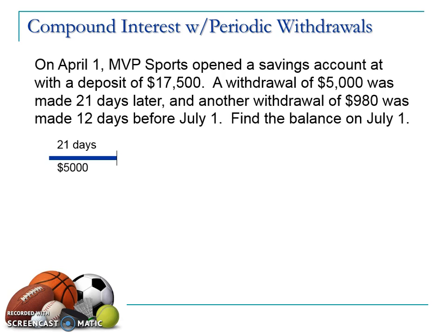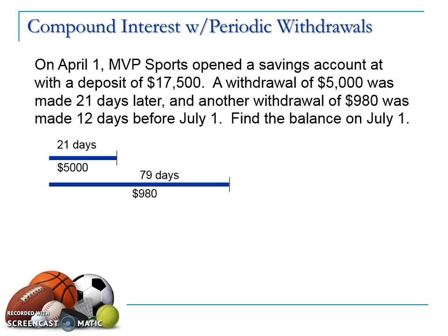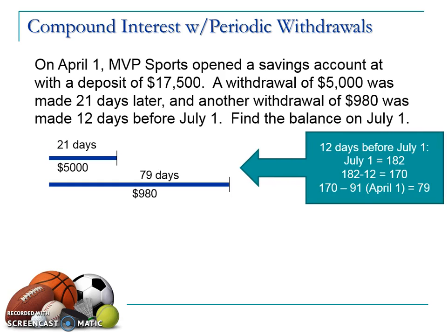In the first withdrawal, we're told $5,000 was withdrawn 21 days after the start. What it's telling us is that the $5,000 compounded for 21 days — we're going to calculate that. We're told another withdrawal of $980 was made 12 days before July 1. We have 79 days here, and we have to do a little bit of calendar math to figure out where that comes from.